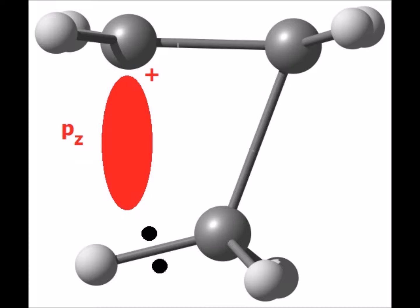On the bridging methyl group, the carbon-hydrogen bond has a bonding pair of electrons shown with two black dots. This pair of electrons can be donated into the empty pz orbital on the carbon, thereby stabilizing the carbocation.